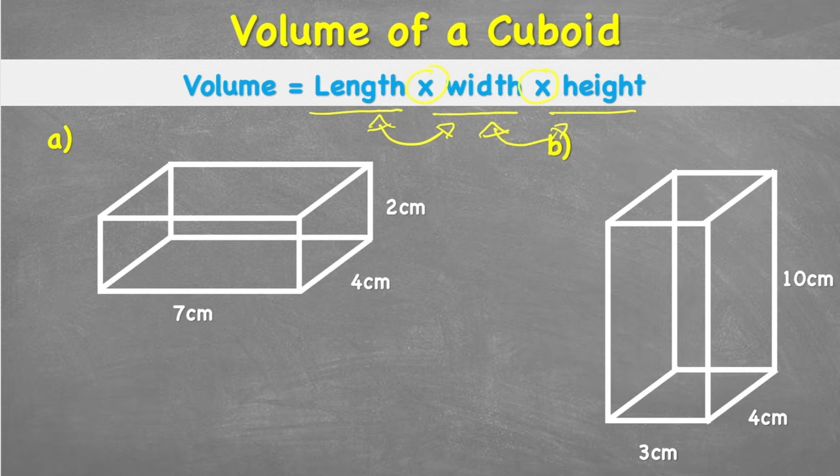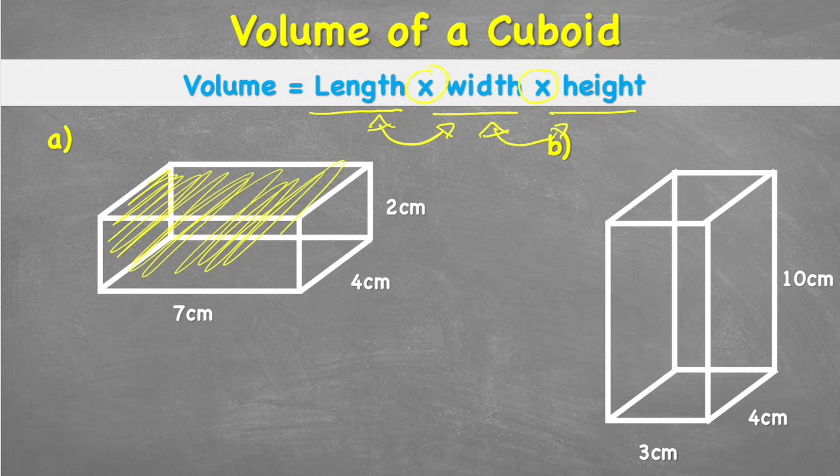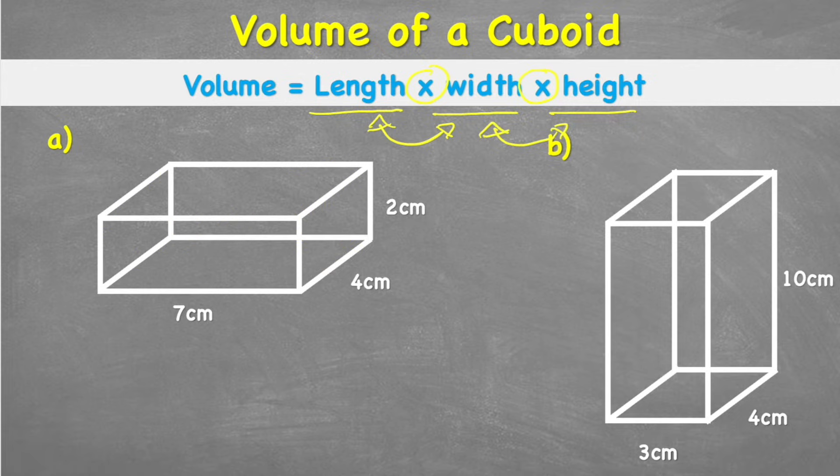So first of all, what is volume? Well, the volume is the amount of space that a shape takes up. So we're talking about all of this inside measurement of this cuboid. Essentially, how much space does it take in space? And we measure it with little cubes that we will put inside our big shape and get a total amount of them.